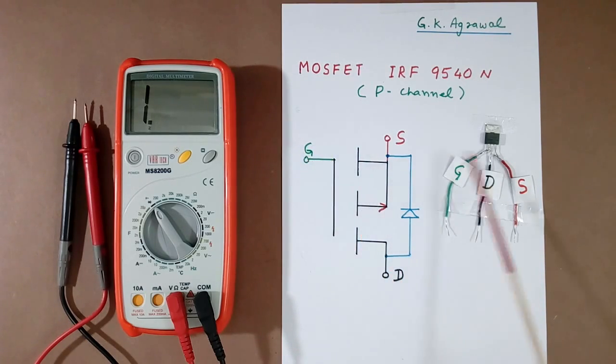This gate is shown here using green color wire. This red color wire is source, and this black color wire is drain. I have written also gate, drain, and source.